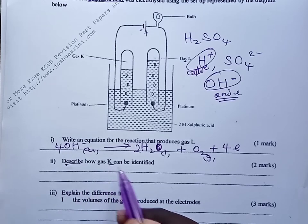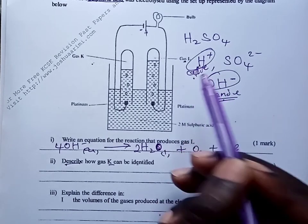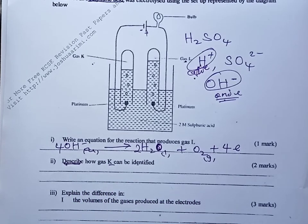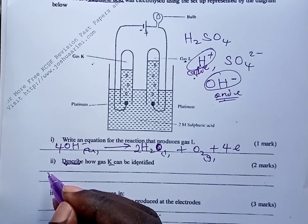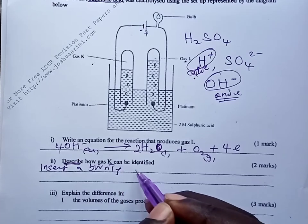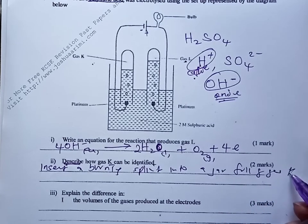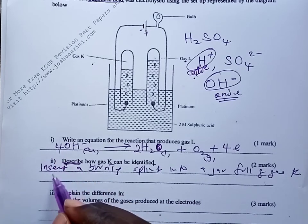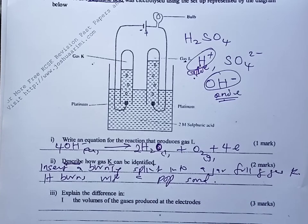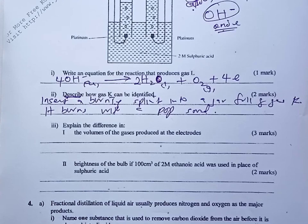Gas K is hydrogen gas, produced by discharging hydrogen ions at the cathode. To identify it experimentally: insert a burning splint into a jar full of gas K. The gas burns with a pop sound. Note that in pure form hydrogen doesn't produce that pop sound, so we assume the gas is mixed with some air.